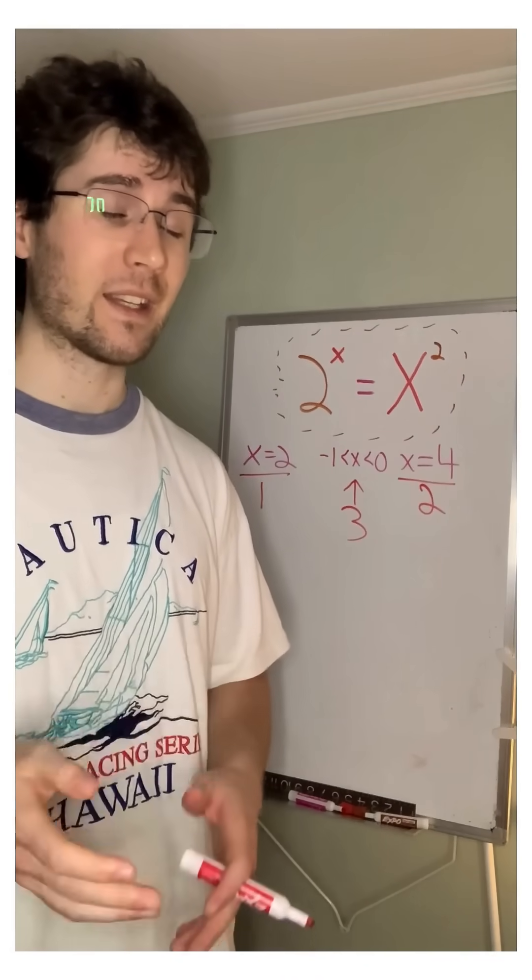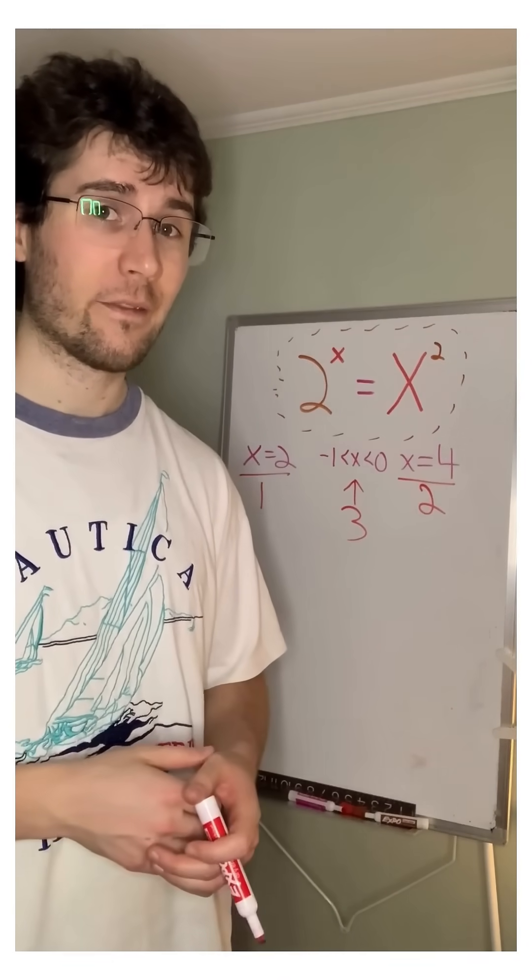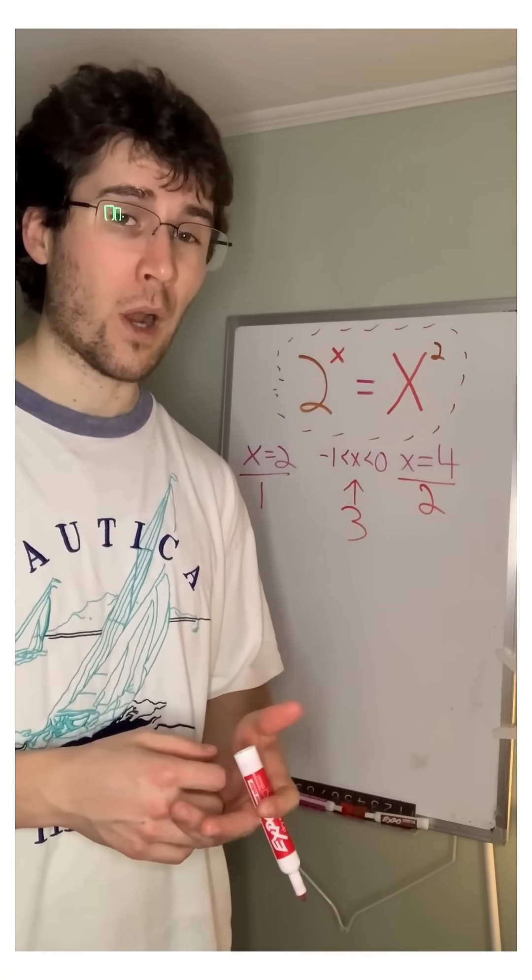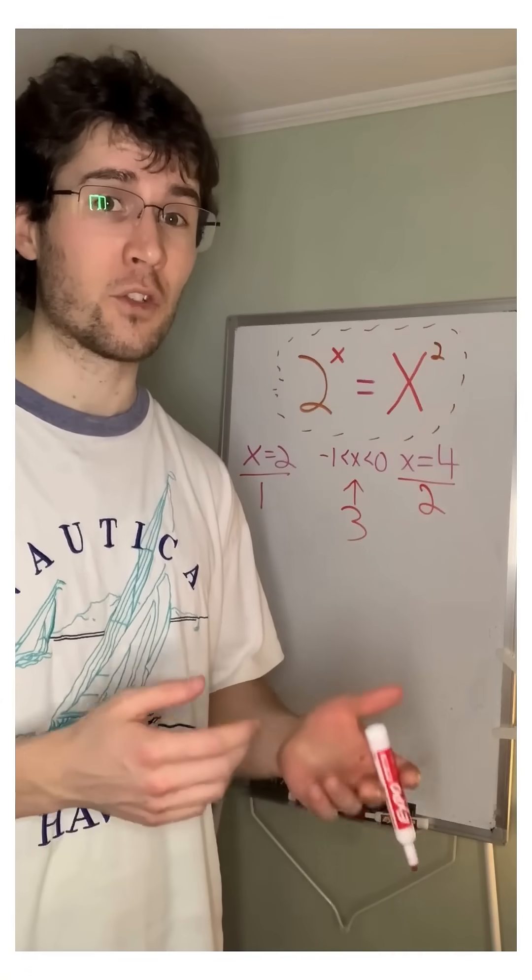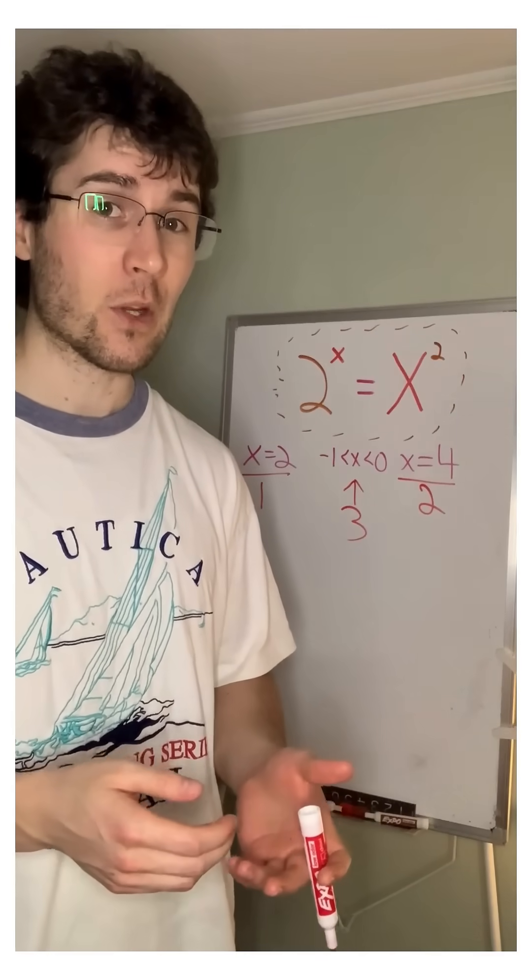The third one is somewhere between negative 1 and 0. Finding that solution and proving there aren't others will probably require looking at the graphs of 2 to the x and x squared to see where they cross over.